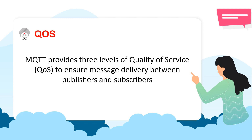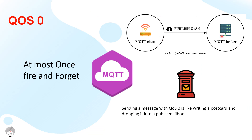Being a publisher, I can define what the QoS of my message should be. In this video we'll be looking at QoS along with real-life examples so you can remember them easily. The first thing we're going to see is QoS 0. In QoS 0, it's all about 'at most once' — basically fire and forget. I send a message to the broker and I don't care about whether the message is received or not.